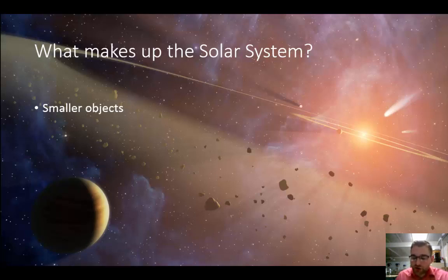Comets are another large group of solar system objects. Comets are loose balls of ice and rock that usually have long, narrow orbits.